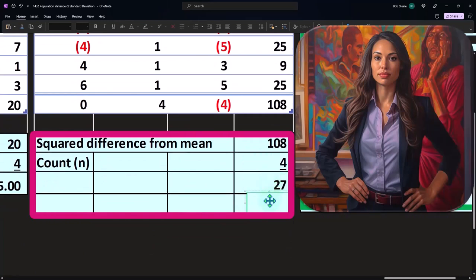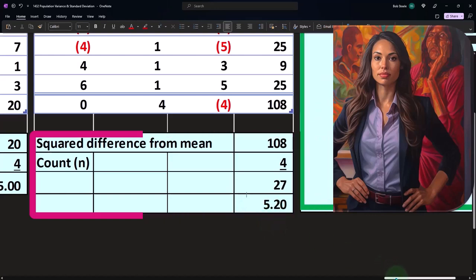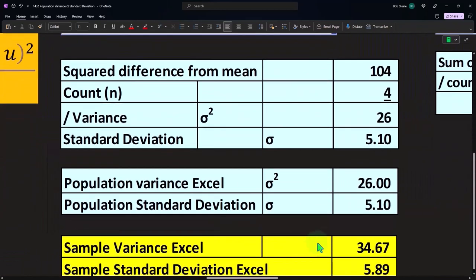This would be kind of representative of the variance except we used a different middle point. Then you'd get 5.20. So now the 5.20 is different than the 5.10 that we got when we used the middle point.